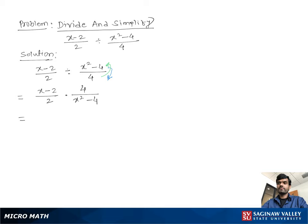Then we can write (x-2)·4 / (2·(x²-4)). Now we factor x²-4 as (x-2)(x+2), giving us (x-2)·4 / (2·(x-2)(x+2)).